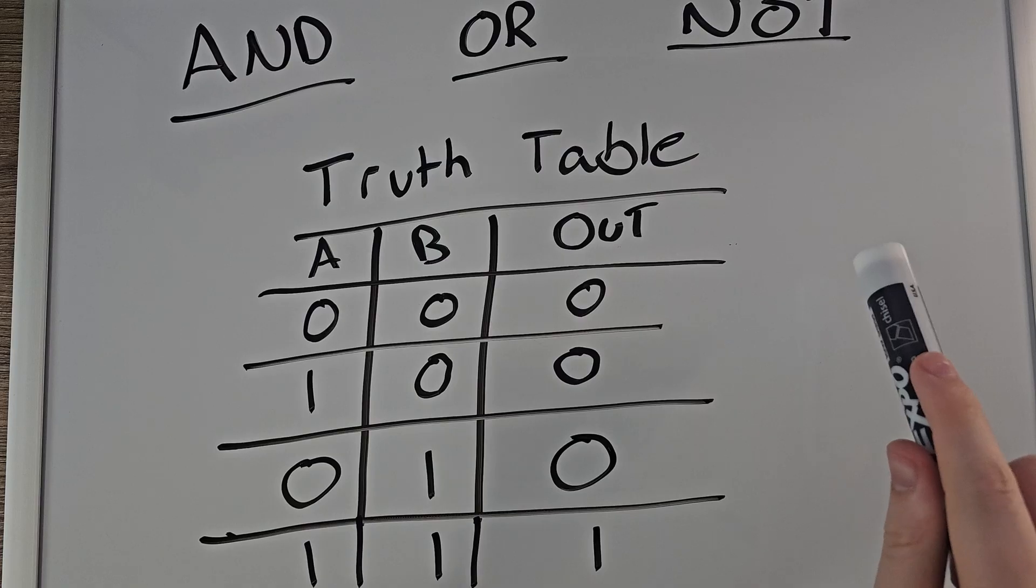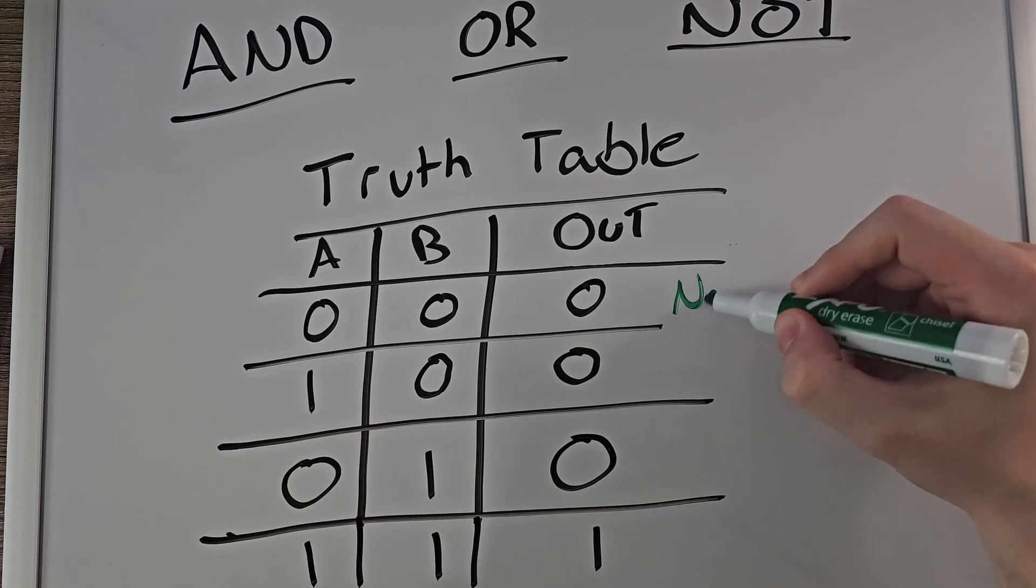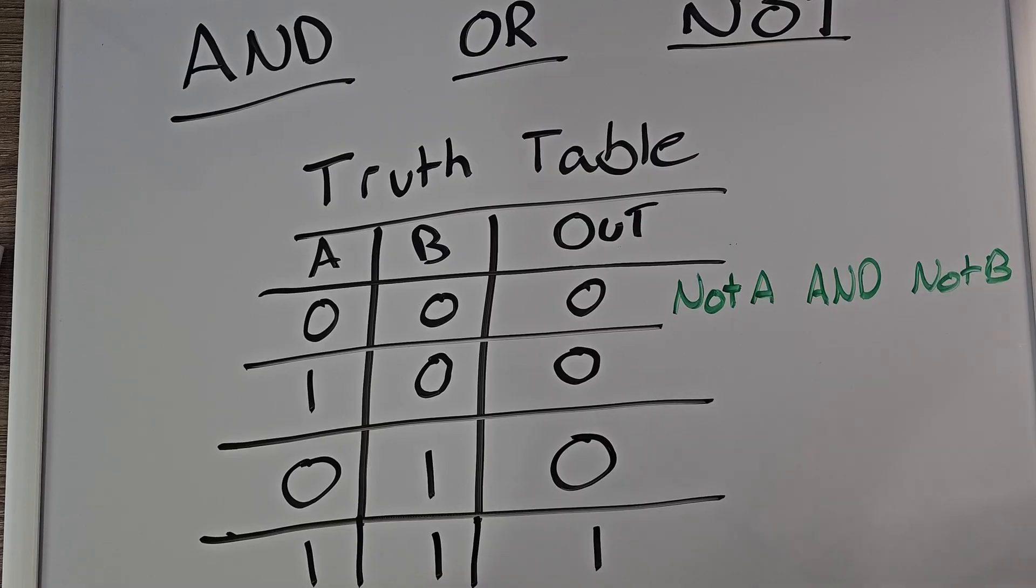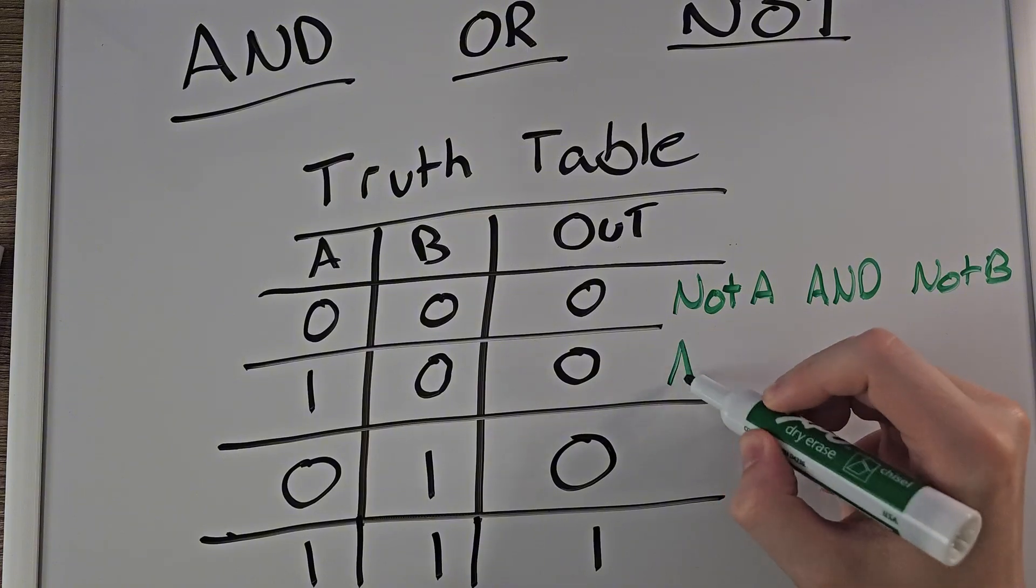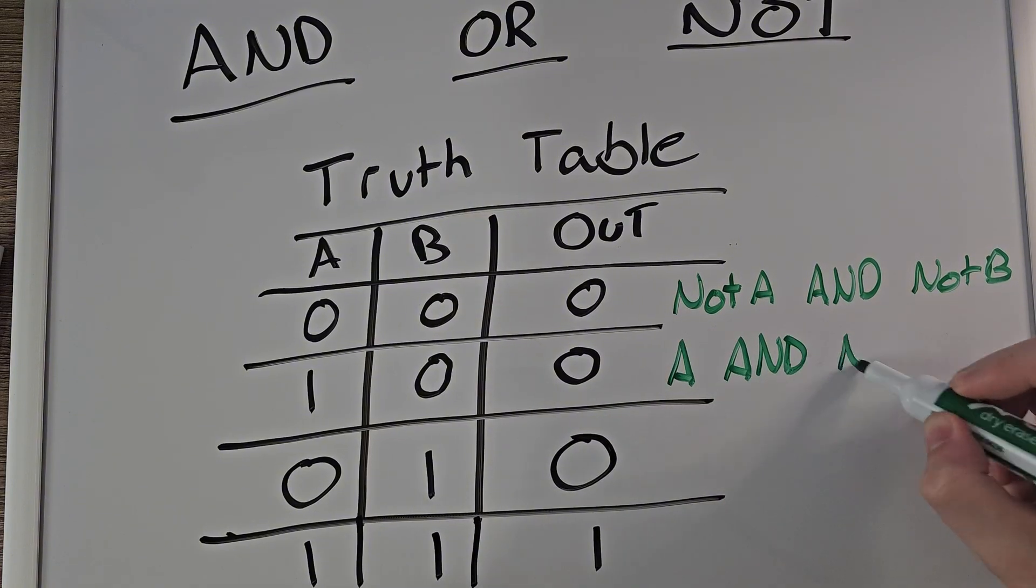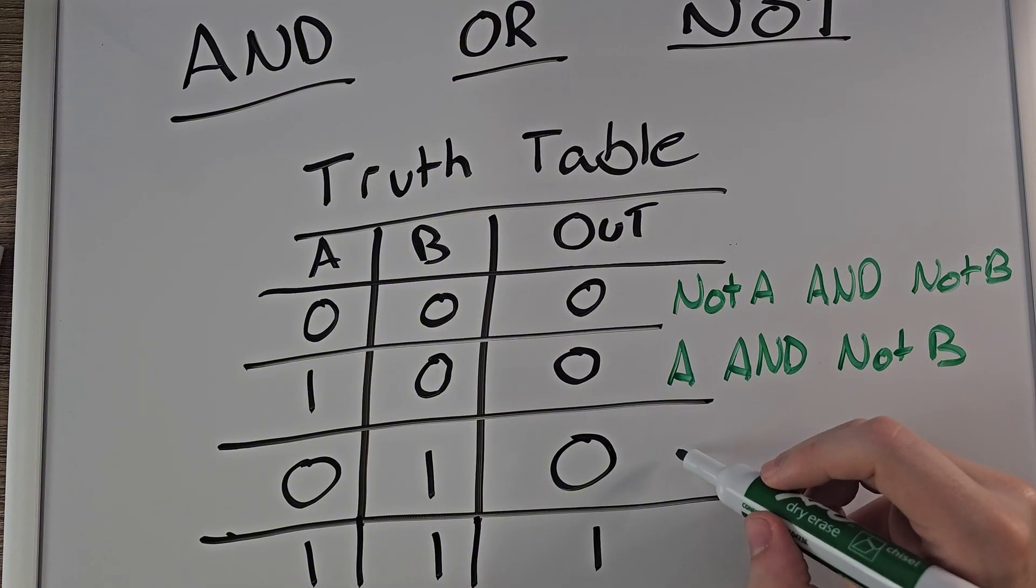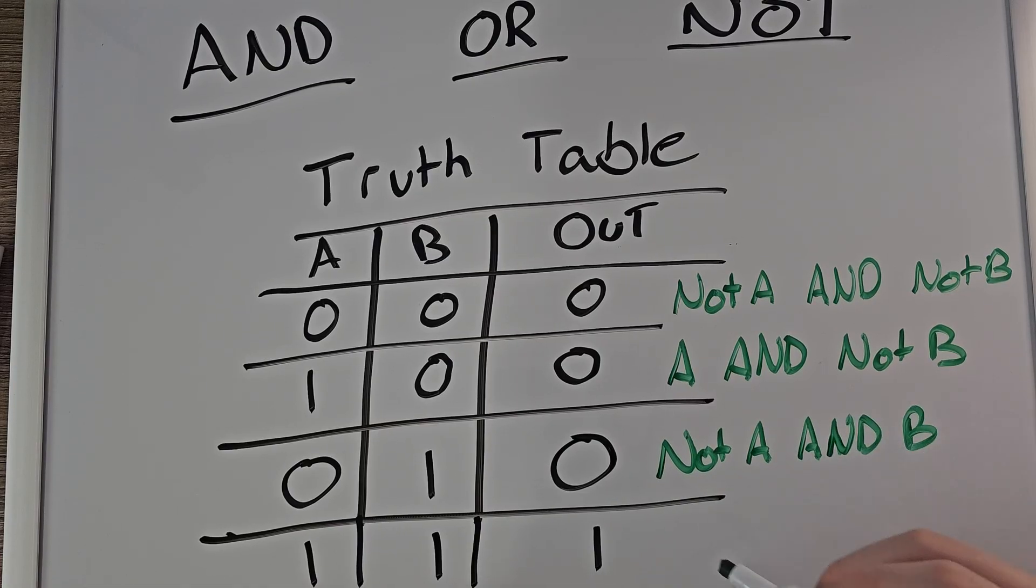Let's look at the first row. We can actually write out what this is. NOT A AND NOT B. So when A is zero, that is NOT A. If B is zero, this is NOT B. When the output is zero, you technically NOT the end result. Alright, the next part is A AND NOT B. And the next row is NOT A AND B. The last row is A AND B. If you noticed, that is AND's truth table. It's just A AND B.